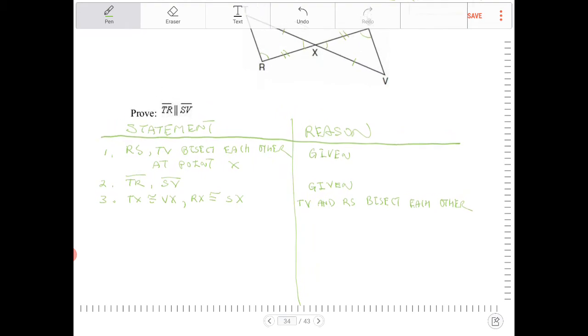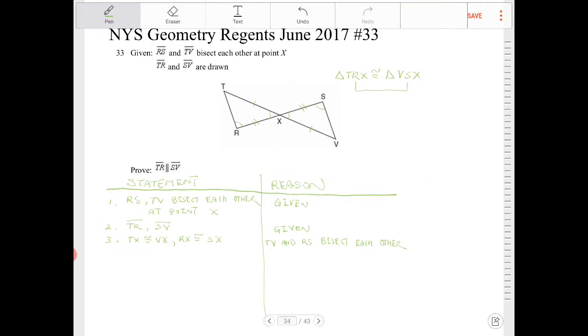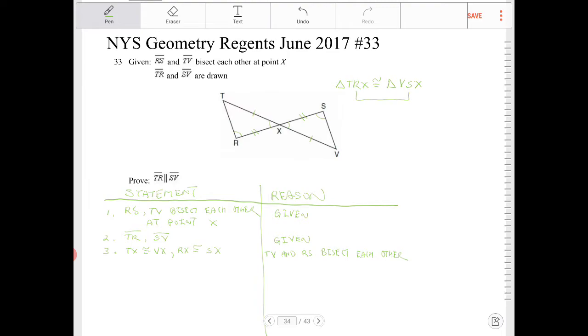I'm sorry, TV and RS bisect each other. I mean, you can certainly write that, you know, it's because of the given, but, you know, I prefer to spell it out, especially when it comes to something as important as a regent, where this is going to, you know, demonstrate your understanding. You want to be as thorough as possible. Don't try to, you know, shorthand when this really matters, right?